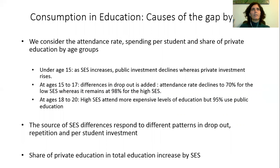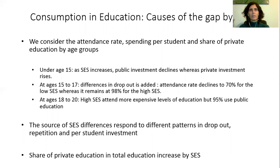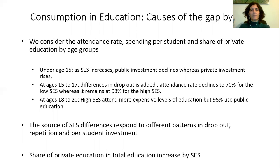To explore the sources of CES differences, we consider for each group the attendance rate, the per student spending — that is the public and private education age profile — and the share of private consumption including fees, materials, etc., for children under age 15. Given the almost universal coverage, the attendance rate gap between groups is not so important for children under age 15. The differences in per student investment come from the incidence of private expenditure. As CES increases, private investment rises while public investment declines. For children at ages 15 to 17, private investment plays a role and there is a strong effect of the differences in dropout. Attendance rate declines for the lowest CES while it remains stable for the highest CES.